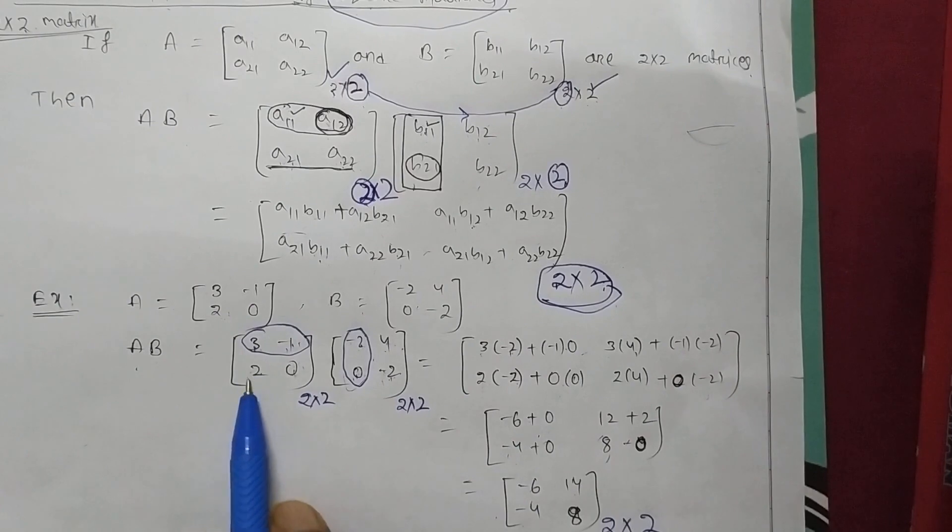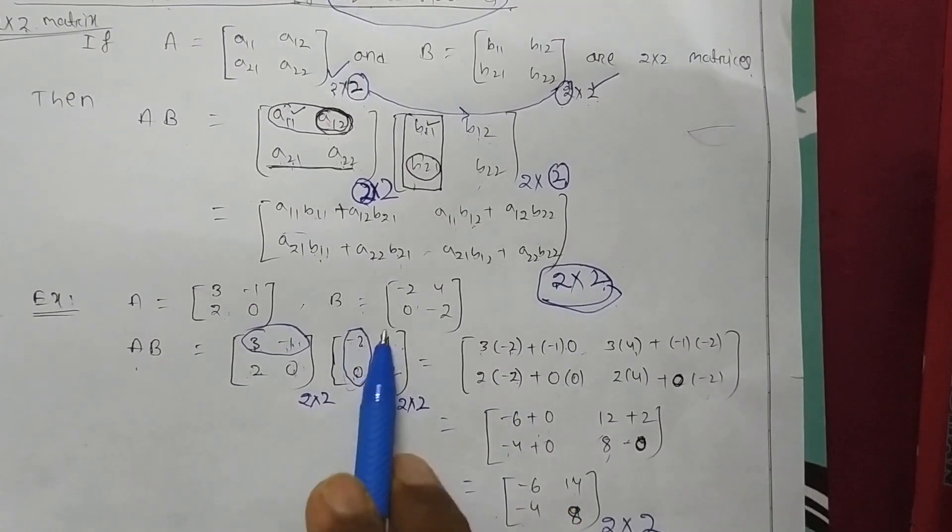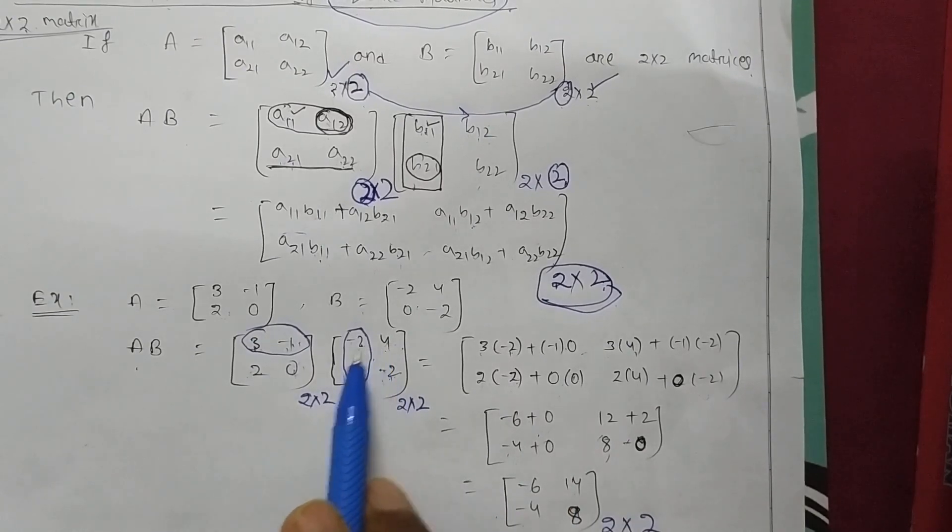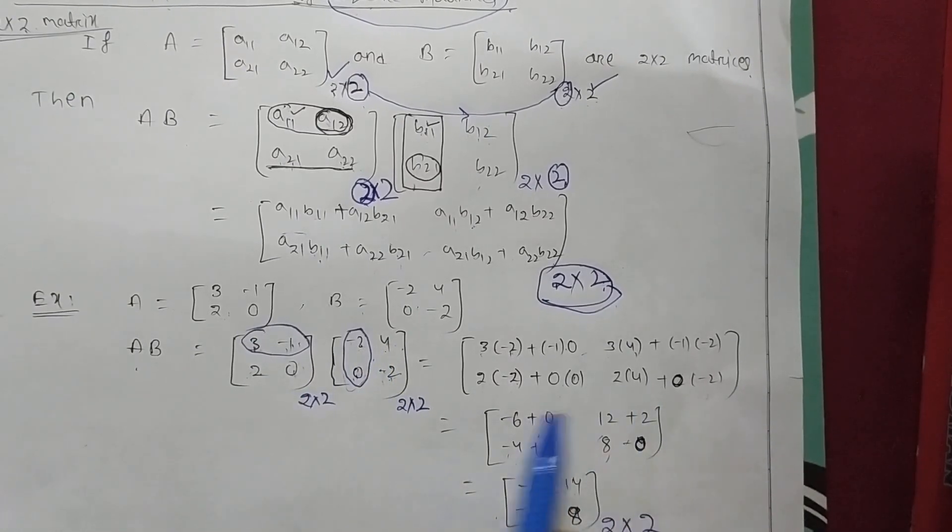Then again by second row: 2 multiplication minus 2, 0 multiplication 0. Then by second column, 2 multiplication 4, 0 multiplication minus 2. Now what you are getting? 3 minus 2, minus 6, 0.